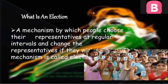Because we are living in a democratic country, major decisions are taken by elected representatives, and to choose representatives, election is the best way. But these elections should be at regular intervals, and change the representatives if they will not work according to the wishes of people. In an election, the voters make many choices: they can choose who will make laws for them, who will form the government and take major decisions, and they can choose the party whose policy will guide the government and lawmakers.